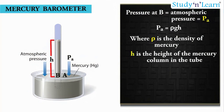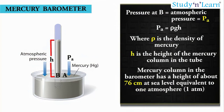In the experiment, it is found that the mercury column in the barometer has a height of about 76 cm at sea level, equivalent to 1 atmosphere.